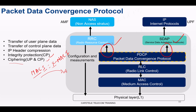PDCP plays a pivotal role in enabling the demanding performance requirements of 5G NR by optimizing header overhead, protecting data, and ensuring reliable delivery. This contributes to higher throughput — increased data transfer — lower latency for critical real-time applications, and network security safeguards.